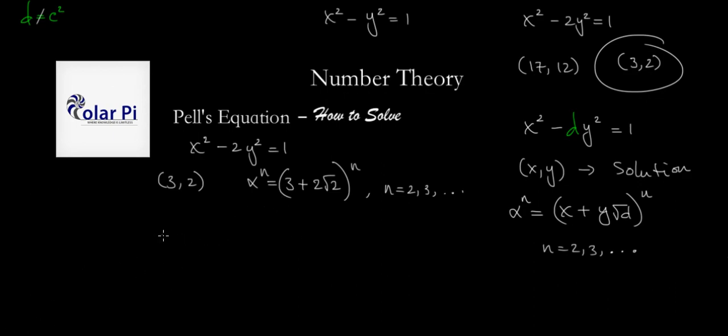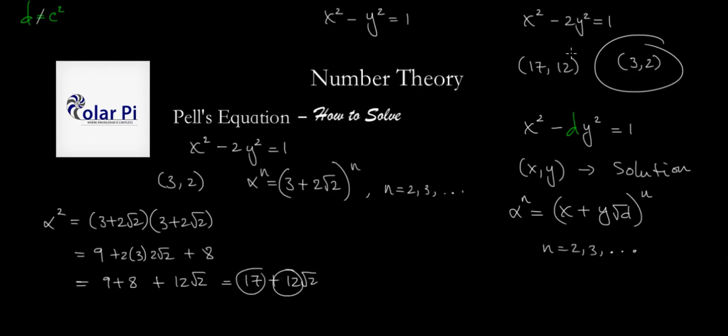Is that true? Let's try it. We already have our solution (3, 2) and our α = 3 + 2√2. Let's try α². α² = (3 + 2√2)(3 + 2√2). By the binomial square, that's 9 + 2(3)(2√2) + (2√2)². Since 2√2 = √8, we have (√8)² = 8. So it's 9 + 8 + 12√2 = 17 + 12√2. And look at that! (17, 12). You see, it works.